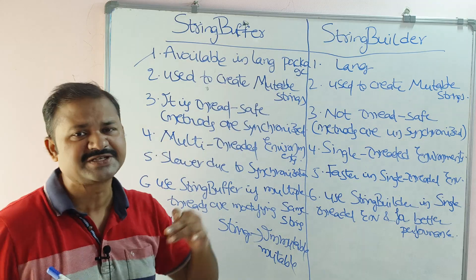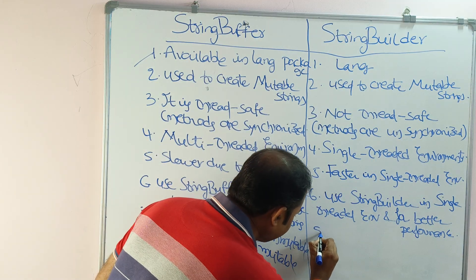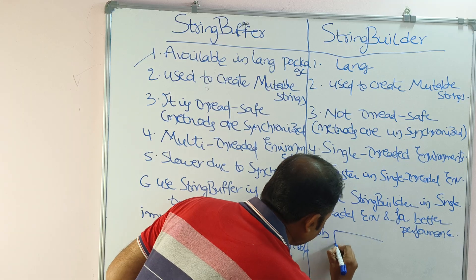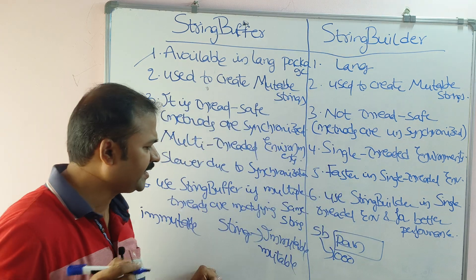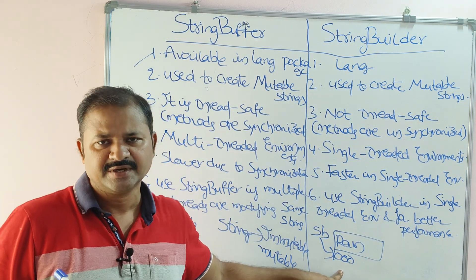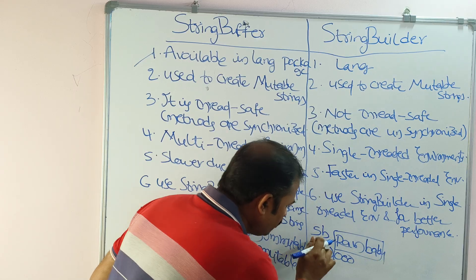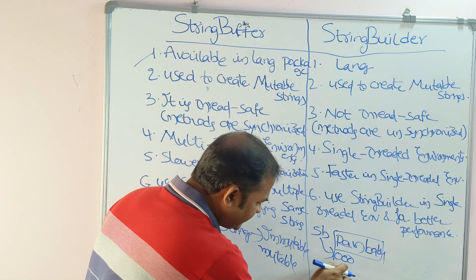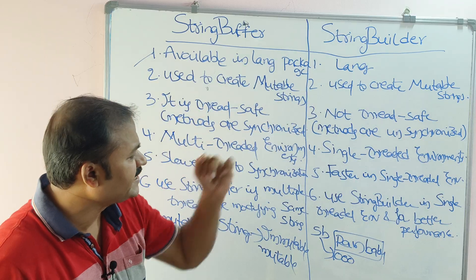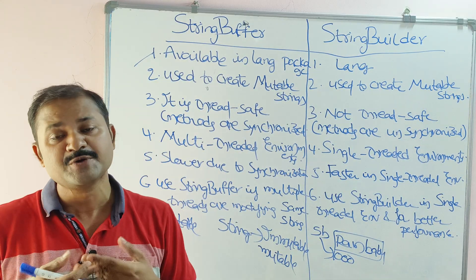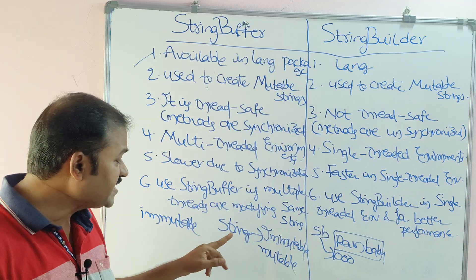Mutable means we can change the content of the string. For example, let the reference variable be 'sb' containing 'Ram', pointing to address 1000. At location 1000, we can modify the content and change it to 'Ram Babu'. The same reference variable 'sb' at address 1000 now contains 'Ram Babu'. That is what mutable means — with StringBuffer and StringBuilder we can modify the content of the string.